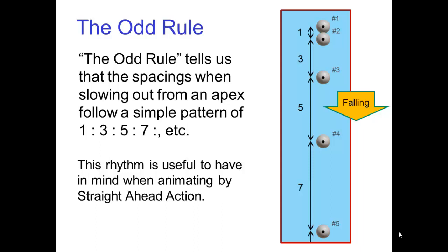Another video described the odd rule, which says that the spacings when slowing out from an apex follow a simple pattern of one to three to five to seven, etc. This rhythm is useful to have in mind when animating by straight ahead action.